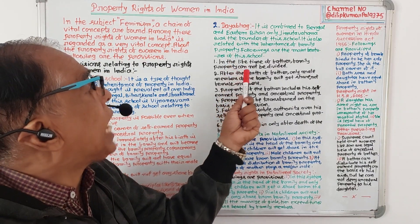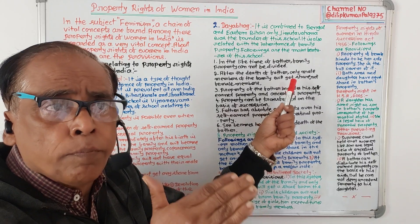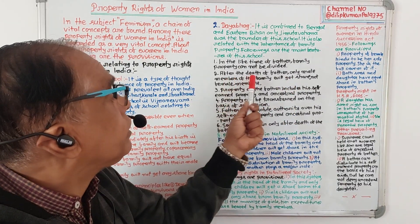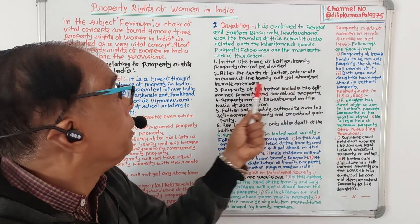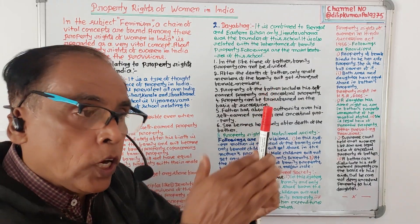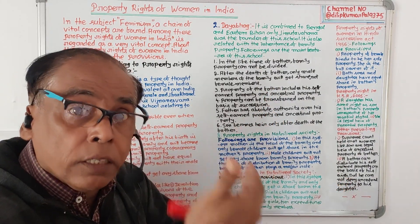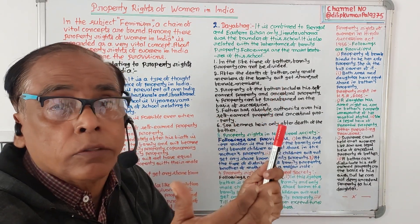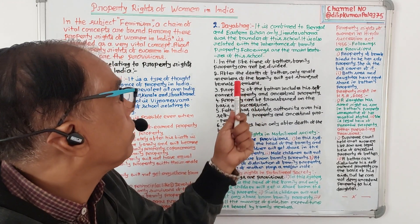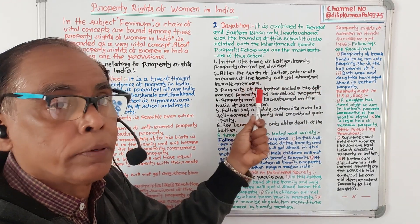Following are the main features of the Dayabhaga school. Number one: in the lifetime of the father, family property cannot be divided. Number two: after the death of the father, only male members of the family will get a share from the family property, not the female members.